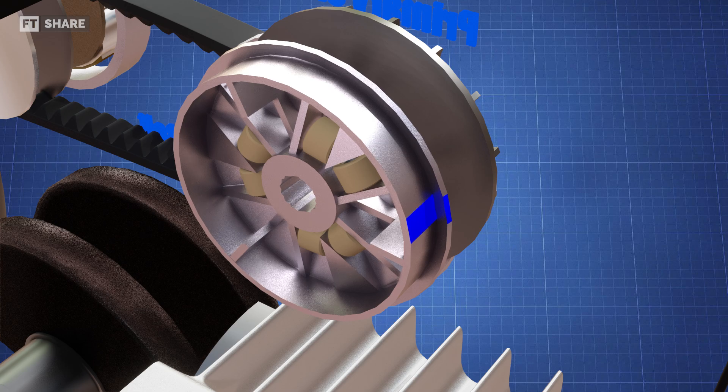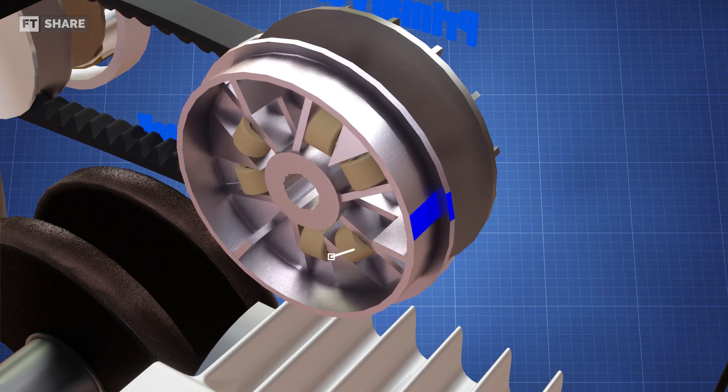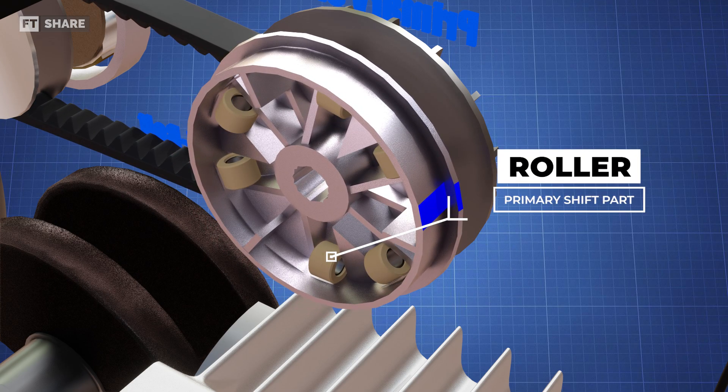First, let's take a closer look at the primary sheave. On the primary pulley, we'll see a set of weight rollers as shown here.